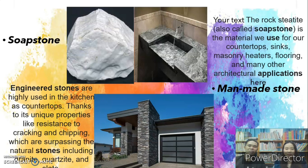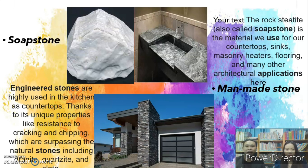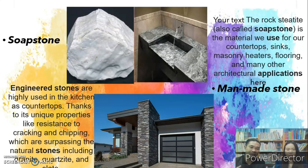Next is man-made stone. Man-made stone, or engineered stone, is highly used in the kitchen — same as soft stone, you can use it for sinks and flooring. Engineered man-made stone is used as countertops thanks to its unique properties like resistance to cracking and chipping, which surpasses natural stones including granite, quartzite, and slate.